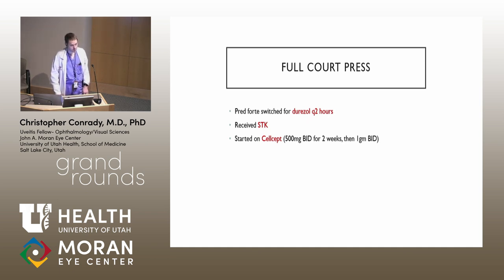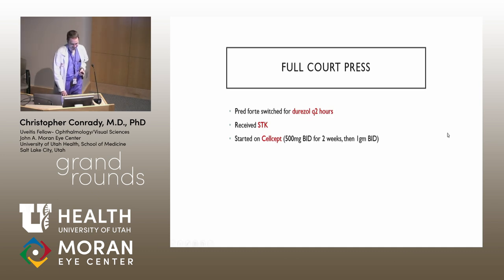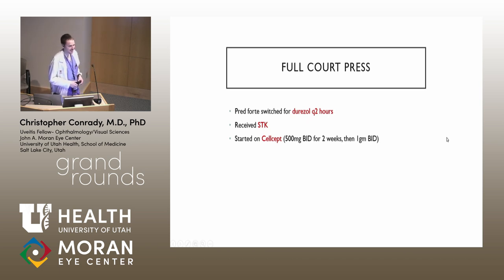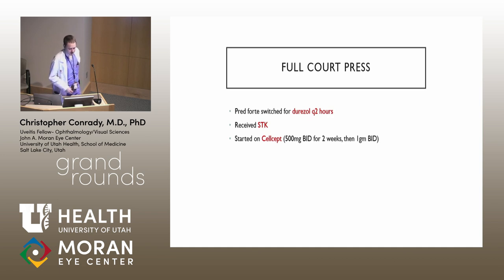She had a plasmoid-like reaction with two-plus AC cell in the left eye, pretty consistent with an HLA-B27 flare and a significant one at that. She needed the full court press because she was monocular and had significant intraocular inflammation. She was switched from Pred Forte to Durezol, received a sub-Tenon's Kenalog injection — basically a periocular steroid injection — and was started on CellCept. For CellCept in adults, we typically start at 500mg twice a day for two weeks, then increase to one gram twice a day.